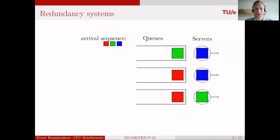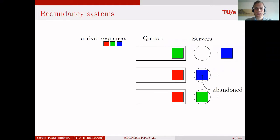Hopefully by this example, the process upon arrival is clear and we can now focus on the departure process. In redundancy systems, it is assumed that the job — for example the blue job — is completed as soon as one of the replicas finishes service. Assume now that the top server finished the service of the blue replica; then the other blue replicas are abandoned from the system. The blue replica at the middle server is abandoned.